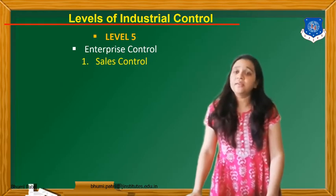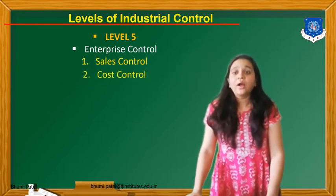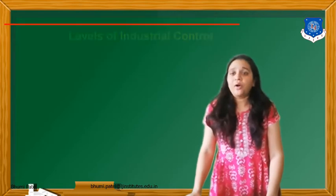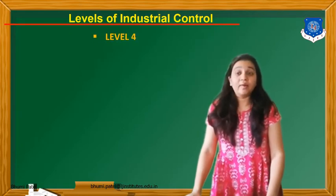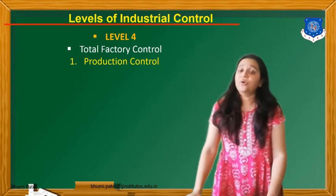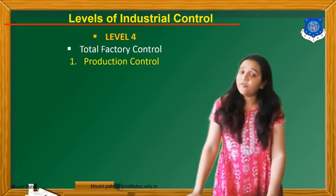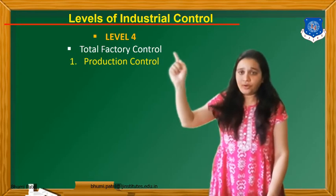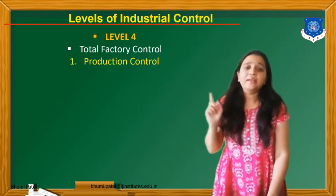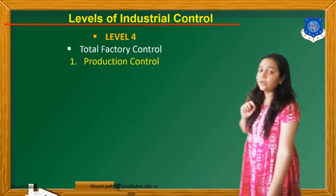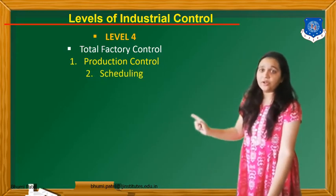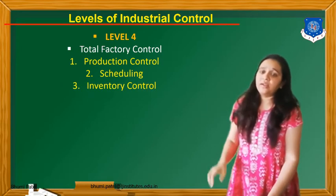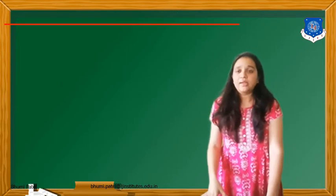Level 5 contains the Sales Control and Cost Control. The next level, level number 4, is known as Total Factory Control. In Total Factory Control, they contain Production Control, Scheduling, and Inventory Control.